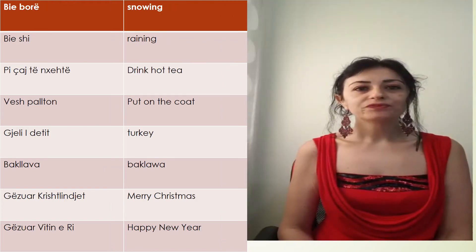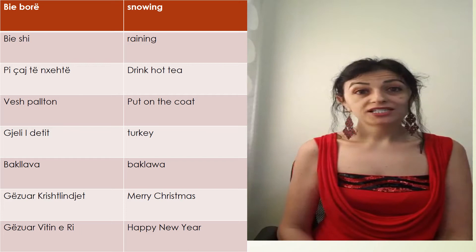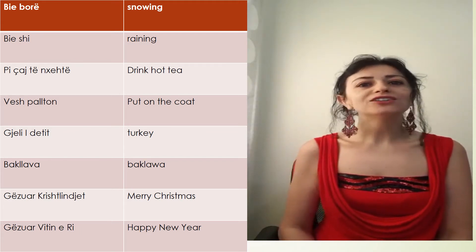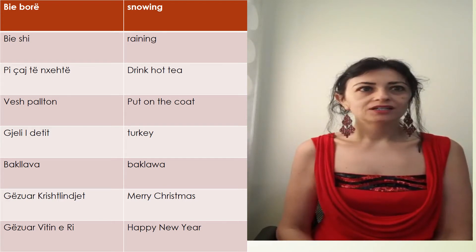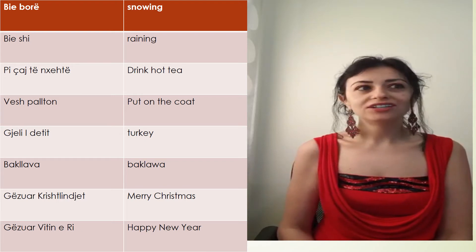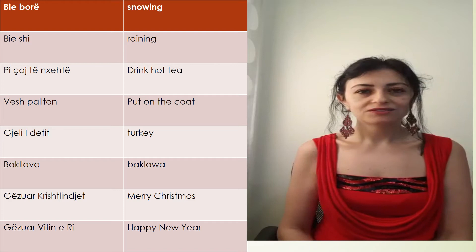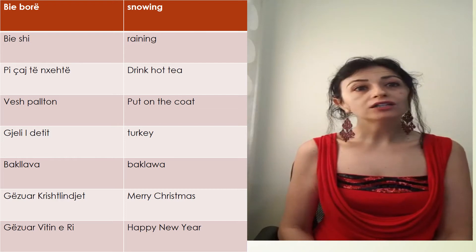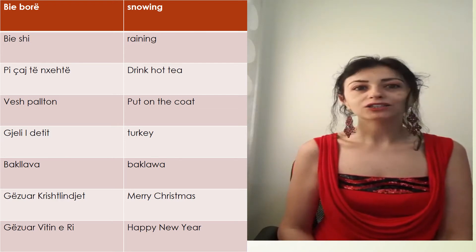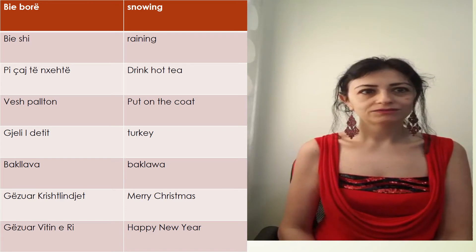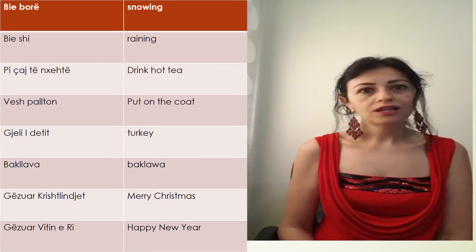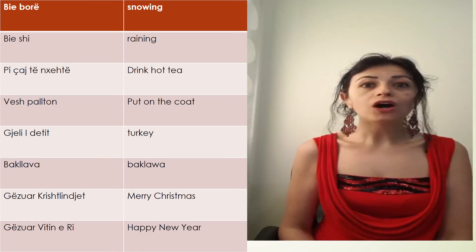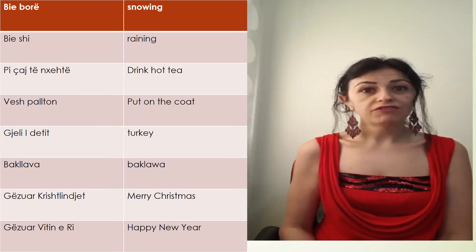How do we say snowing in Albanian? We say bie borë or bie dëborë. How do we say raining? Bie shi. How do we say drink hot tea? Pi çaj të nxehtë. How do we say I put on the coat? Unë vesh palton. You can use the same structure: unë vesh trikën for I put on the sweater, and unë vesh çizmet for I put on the boots.